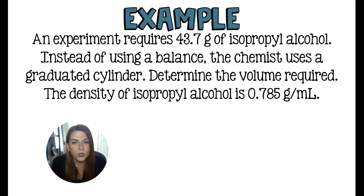So this says, an experiment requires 43.7 grams of isopropyl alcohol. That's rubbing alcohol. Instead of using a balance, the chemist uses a graduated cylinder. Determine the volume required. The density of isopropyl alcohol is 0.785 grams per milliliter. This information is something that might be on the bottle, not your bathroom or kitchen bottle of isopropyl alcohol. This is going to be on like the chemistry chemical, possibly. If not, it is on the SDS, the safety data sheet, or you could just look it up. This is a really common chemical.